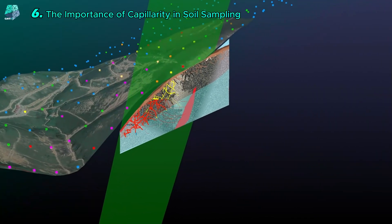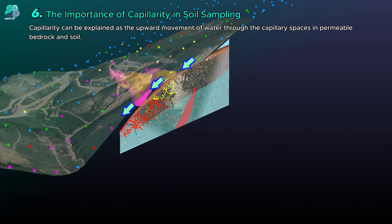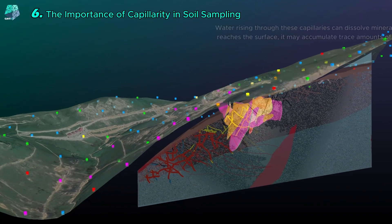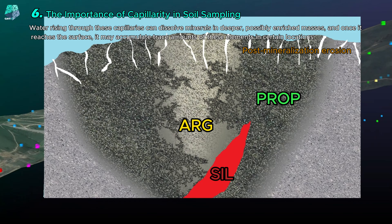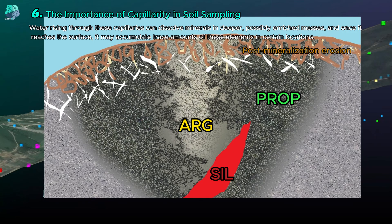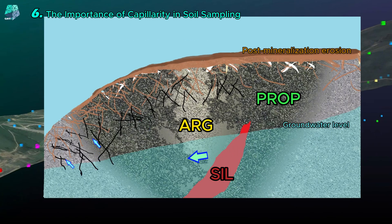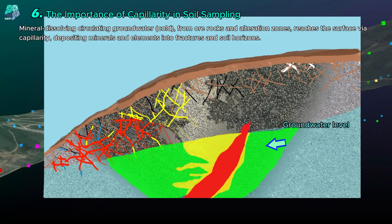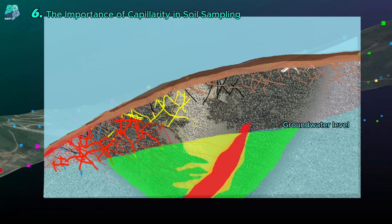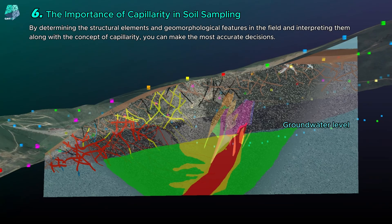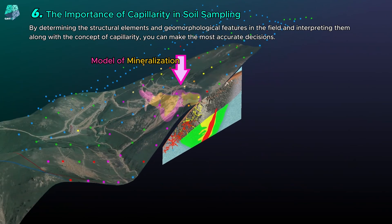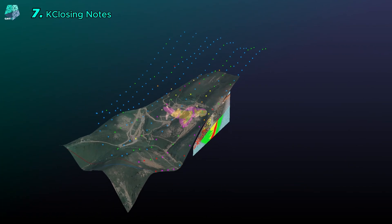The concept of capillarity is quite important in soil sampling. Capillarity can be explained as the upward movement of water through the capillary spaces in ground rocks and soil that have permeable pores. The rising water, which may dissolve minerals in deeper enriched masses, can accumulate these elements in specific places on the surface, even in trace amounts. Mineral-dissolving circulating groundwater from ore bodies and alteration zones reaches the surface through capillarity, leaving minerals and elements in fractures and soil horizons. By determining the structural elements and geomorphological features in the field and interpreting them with the concept of capillarity, you can make the most accurate decisions. It will be beneficial for you to seek help from experienced consultants for all stages, from determining whether soil sampling will work in your licensed area to interpreting the sampling results.